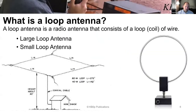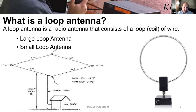So what is a loop antenna? A loop antenna consists of a loop — basically a coil of wire. That's all it is. In this slide, you can see there's a large loop and there's a small loop, so they're both loop antennas but obviously they're different sizes.